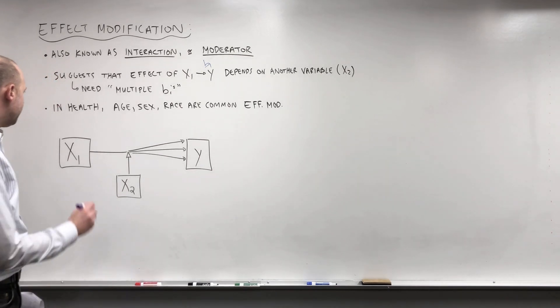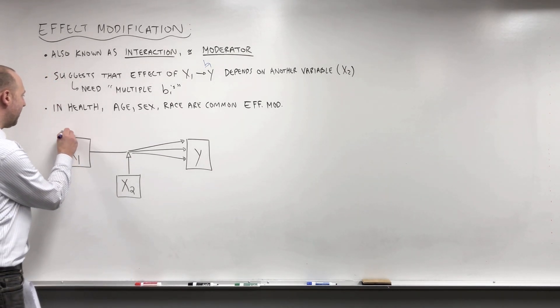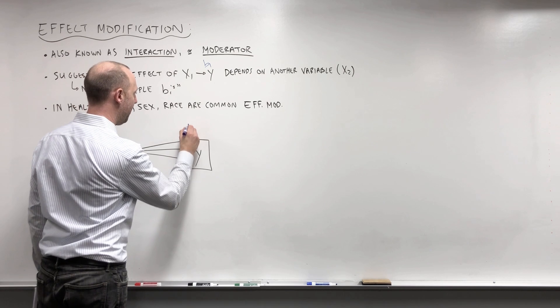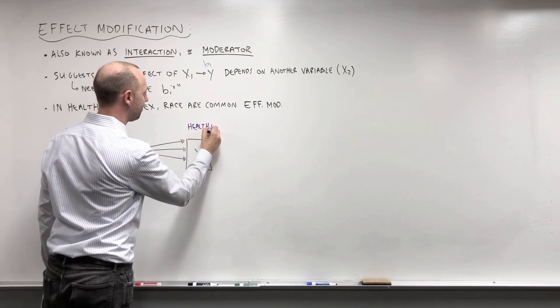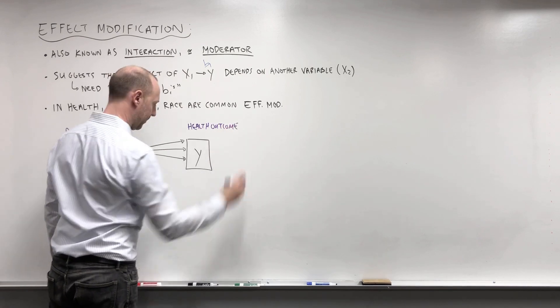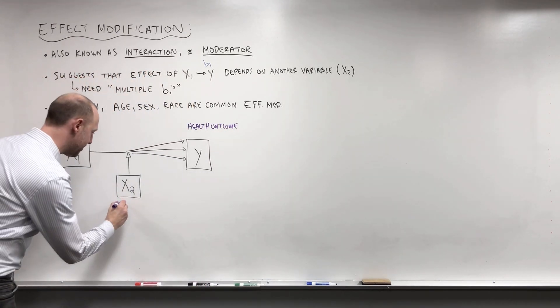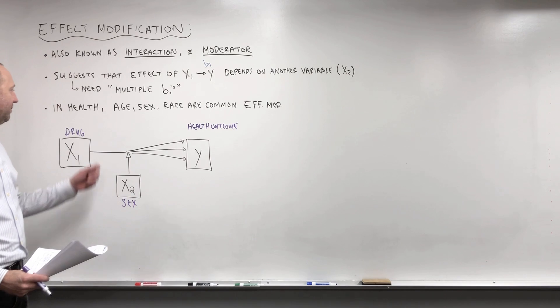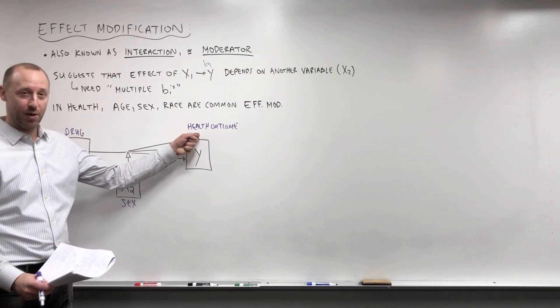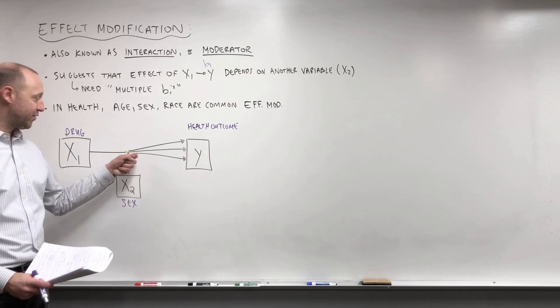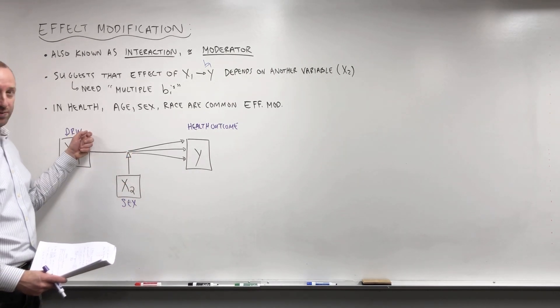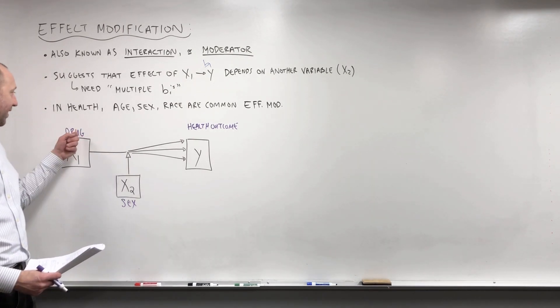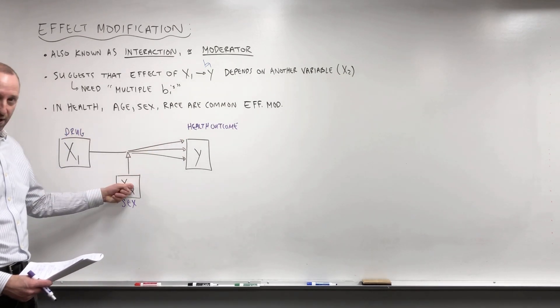So a few examples. We might be looking at what effect does some drug or some treatment have on some health outcome, and a potential effect modifier would be sex, biological sex. And what that would mean is if the effect that the drug has on some outcome changes depending on if the individual is male or female. So maybe the drug works well for females but not very well for males. That's an example of effect modification. The effect that this has on the outcome is modified by this other variable.